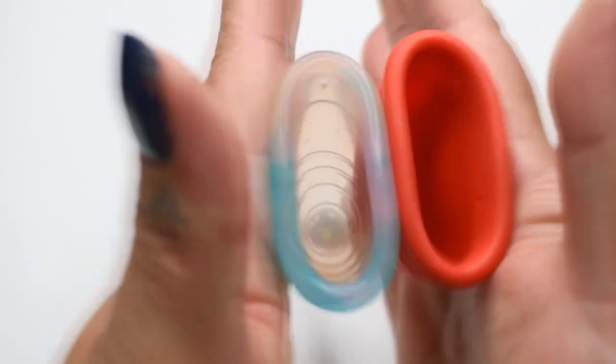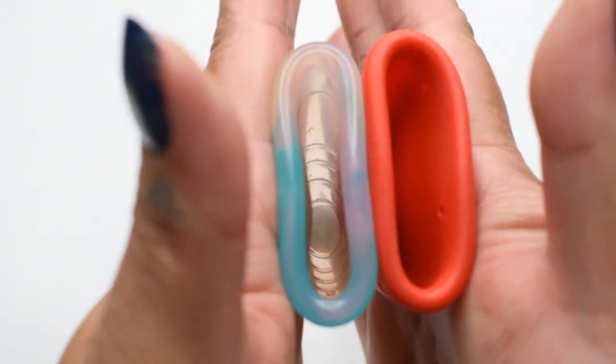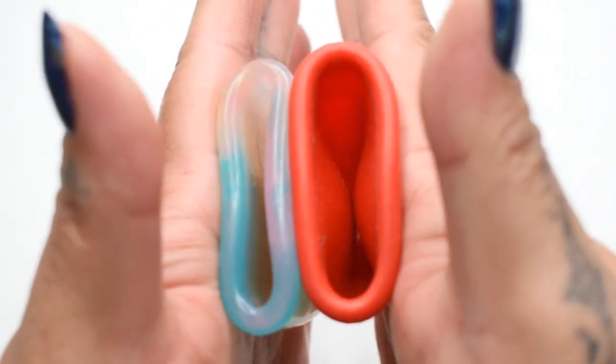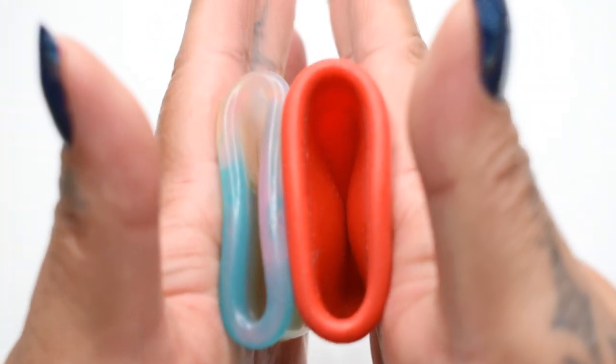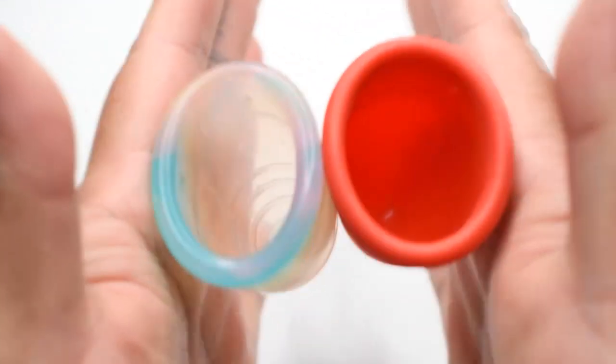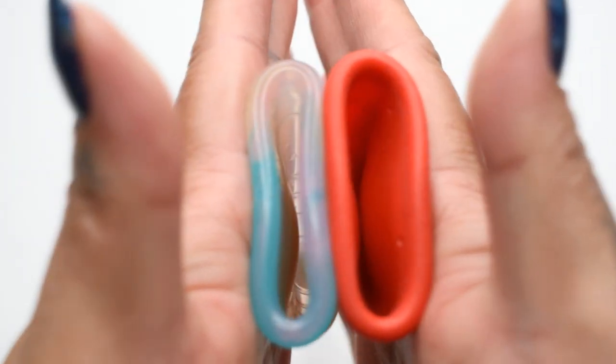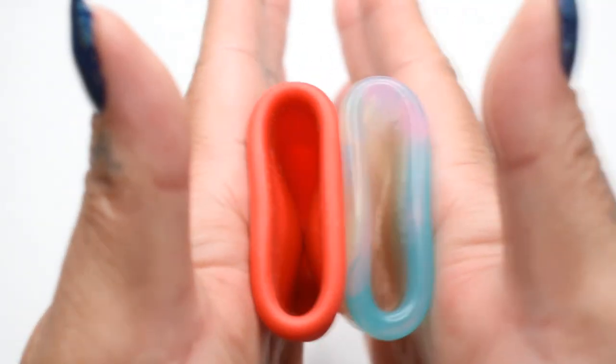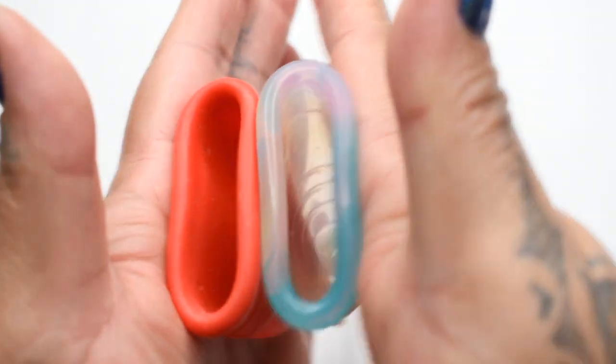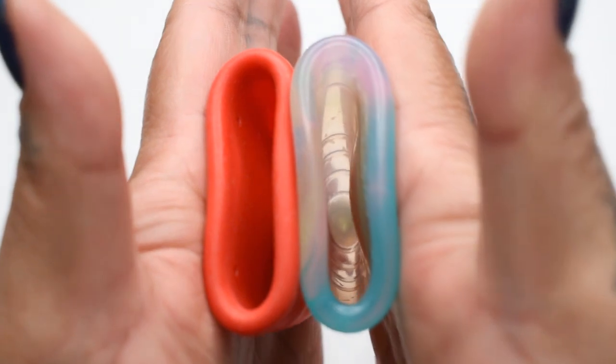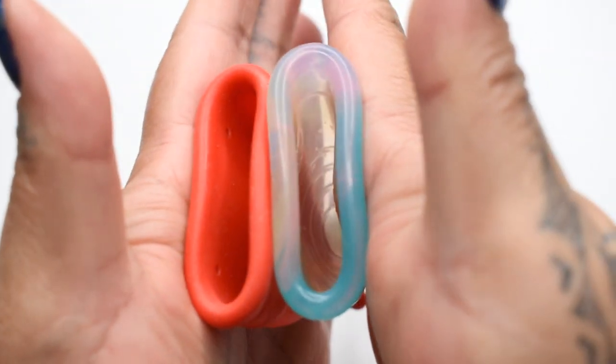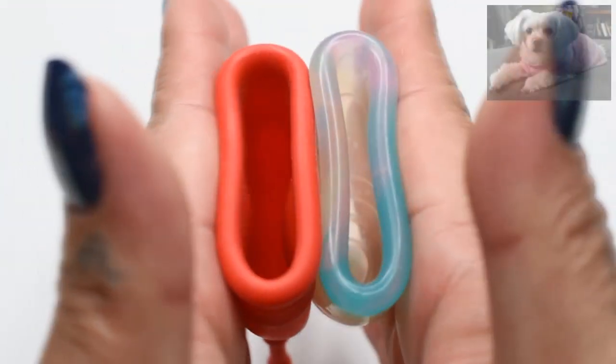Here's the inside of the Yuki Rainbow and inside of the firm version Mermaid Cup. Again, these are both the small size. Inside of the Mermaid Cup and inside of the Yuki, and just the rims.